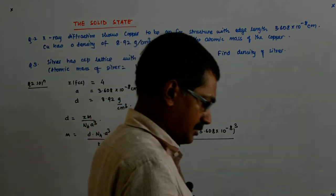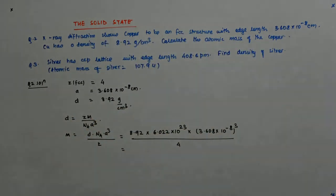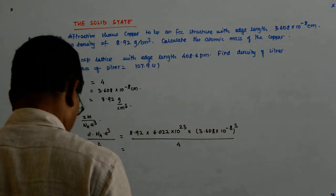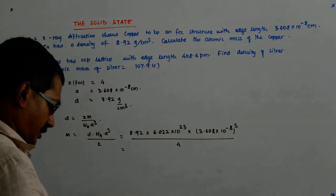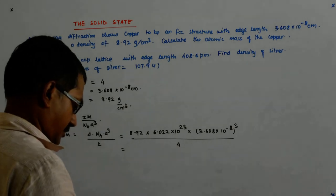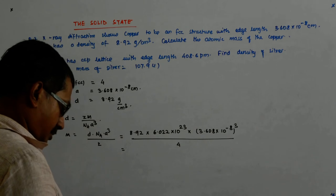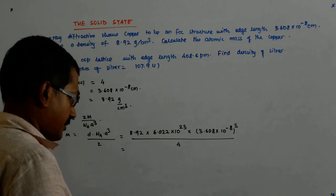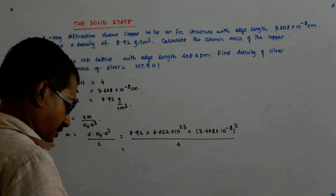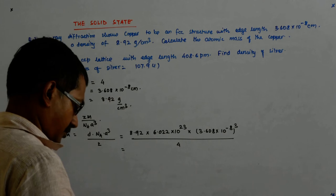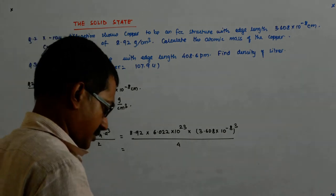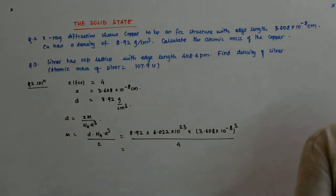So, I will again be using the calculator. That gives me 8.92, 6.022 into 10 to the power 23 into 3.608 into 10 to the power minus 8 whole cube. So, that is 63.07, it says.